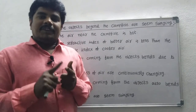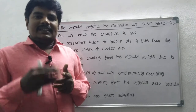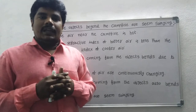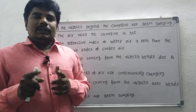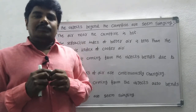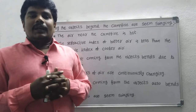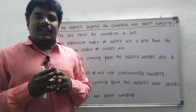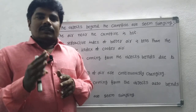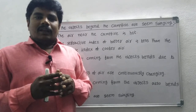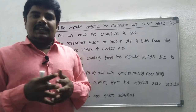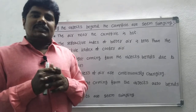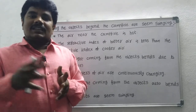The refractive index of hotter air is less than the refractive index of cooler air. So the light coming from the objects bends due to refraction. But the layers of air are not constant — they are continuously changing. So the light coming from the objects also bends continuously.